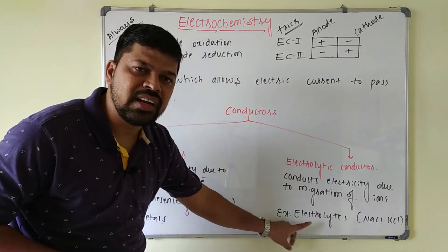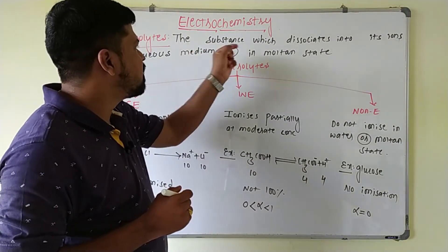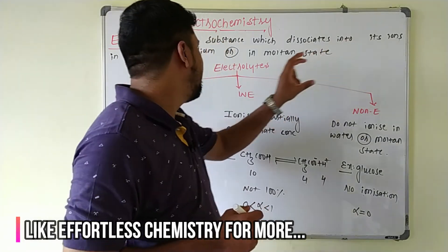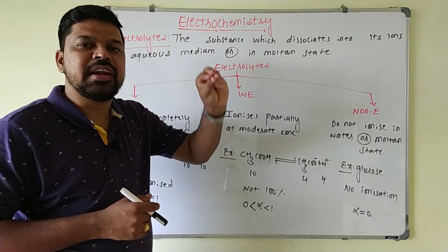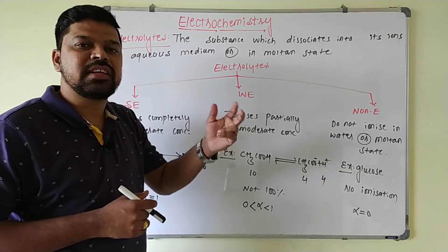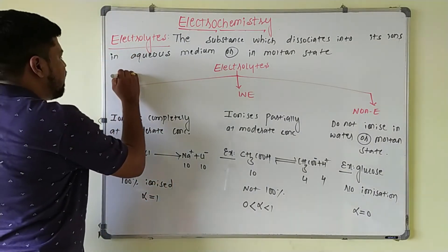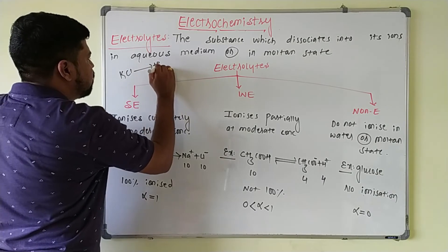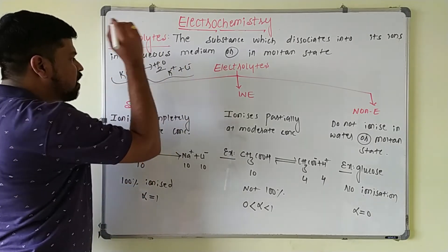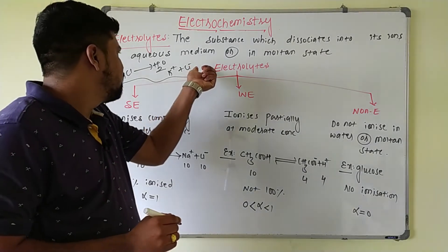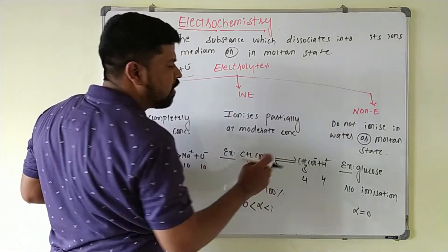Electrolytes are substances which dissociate into ions in the aqueous medium or in the molten state. When a substance is added to water and splits into cation and anion, that substance is called an electrolyte. For example, KCl added to water splits into K⁺ and Cl⁻ ions. Electrolytes are classified into three types: strong electrolytes, weak electrolytes, and non-electrolytes.